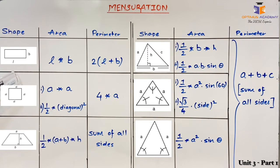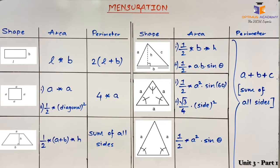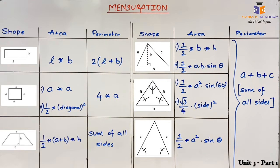The first shape is rectangle. The area of a rectangle is L × B. The perimeter of a rectangle is 2(L + B), where L stands for length and B stands for breadth. The next shape is a square. The basic formula for area of a square is side × side, where A is used as the variable for side, giving us A².